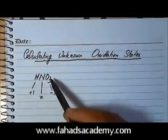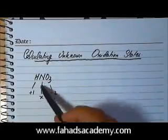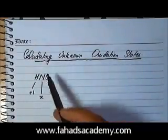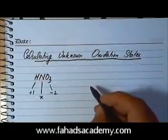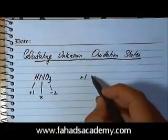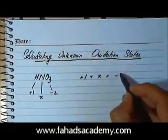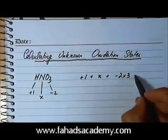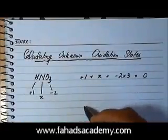We have the oxidation states of two of the elements, and the unknown oxidation state of nitrogen. If you look at this molecule, the net charge is zero, which means the individual charges must all add up to zero. The charge of hydrogen is plus one, the charge on nitrogen is X, and there's only one. The charge on oxygen is minus two and there are three oxygens, so the net charge must equal zero because HNO₃ has no charge.